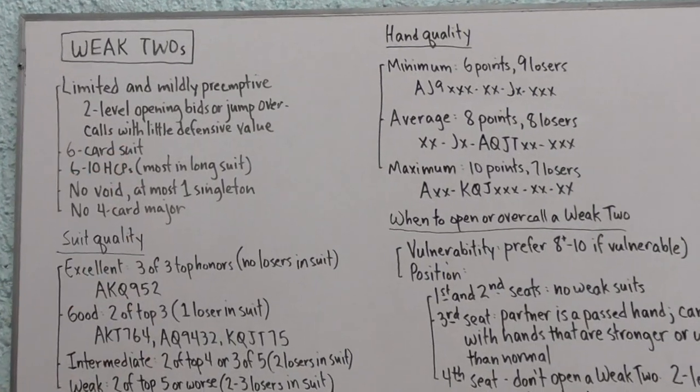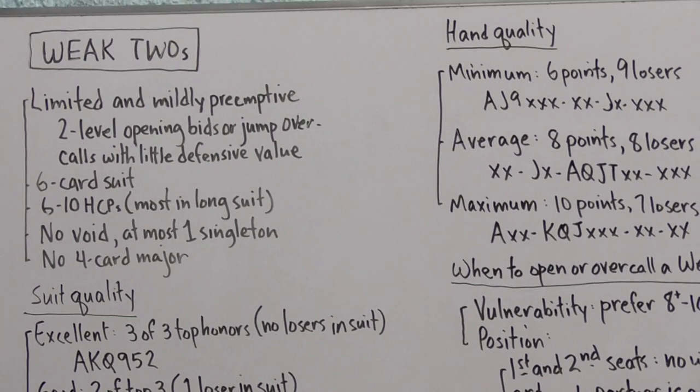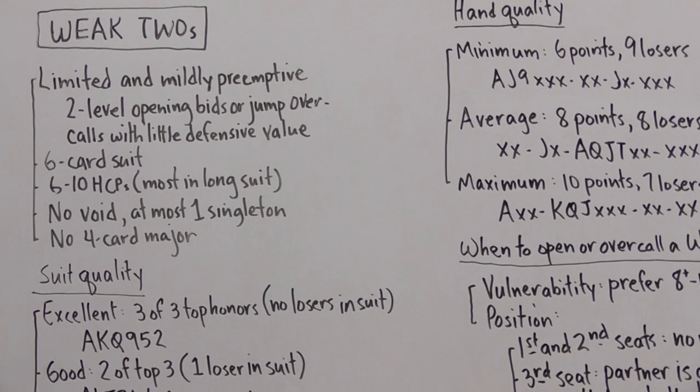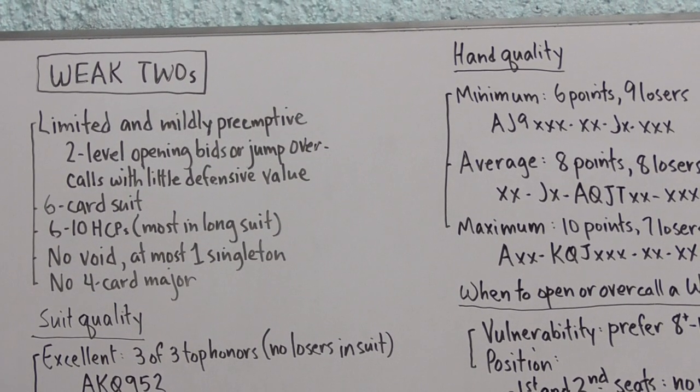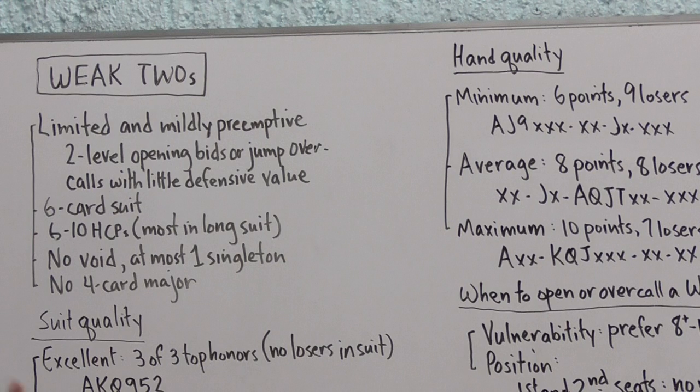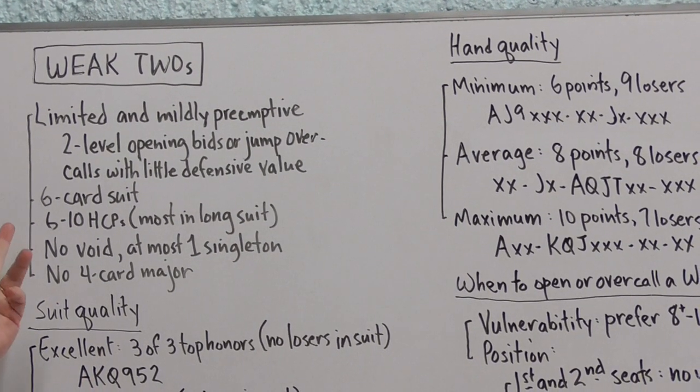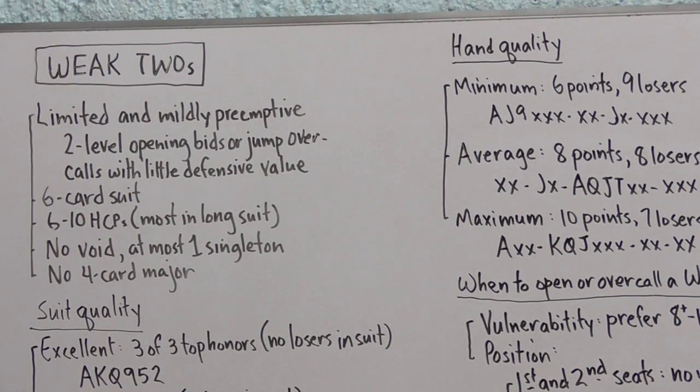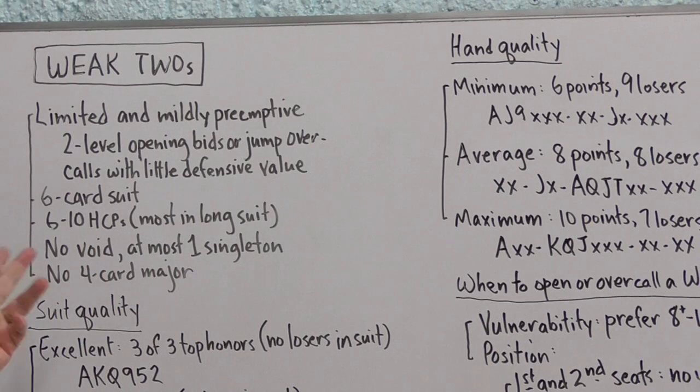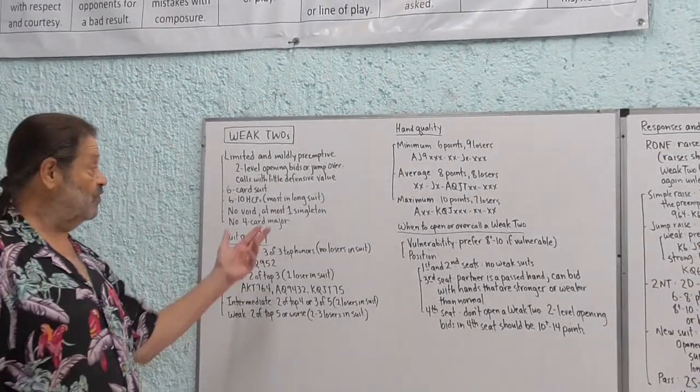We're promising a six card suit. The range that you choose to use is up to you. I've chosen six to ten here but five to eleven is common also. Six to ten high card points, most of them will be in your long suit, and this means you won't have two high cards like an ace and a king outside of your suit.